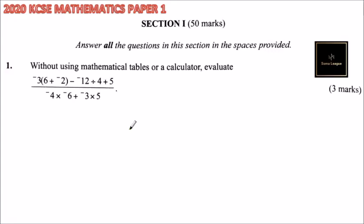This is question number one, section one of paper one, which consists of 50 marks. You are supposed to answer all the questions in this section in the spaces provided.